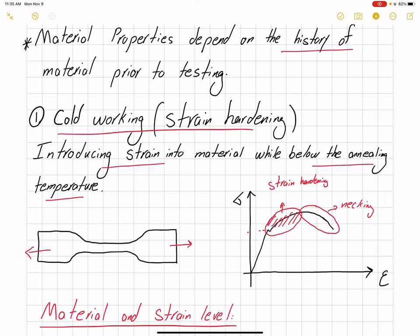We are applying a load and then we unload the specimen. After unloading, we get rid of the elastic displacement, but we are going to have some plastic deformation or permanent deformation remaining. After reloading, the material property will be different — we are going to have a different yield point.